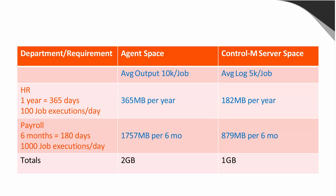Let's look at payroll. If they have 1,000 job executions a day, and they only want to keep theirs for six months, you're looking at over 1 gig per six months for your agent disk space. And for your Control-M server database, 879 megabytes per six months. These are just averages, but you can see just for two departments that your agent disk space would be required to be 2 gigs, and then your Control-M server database would need to store 1 gig of information.